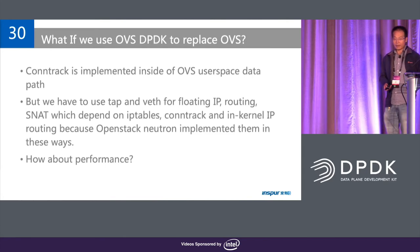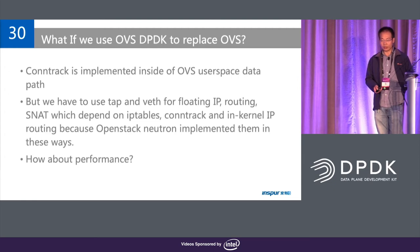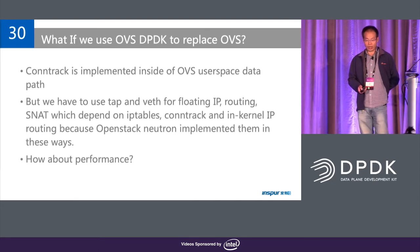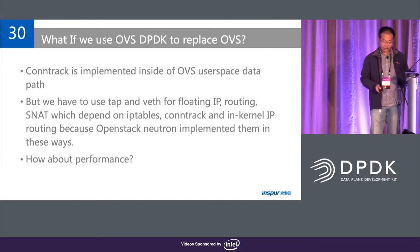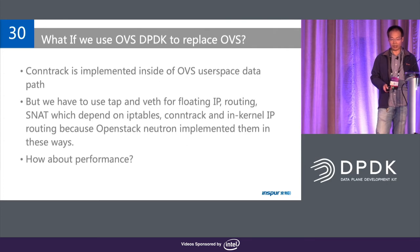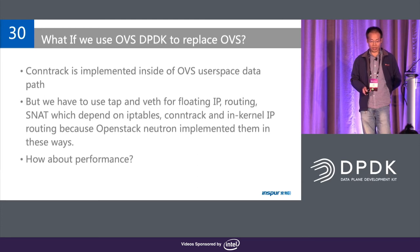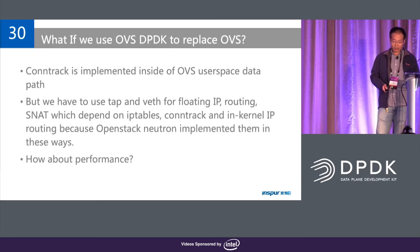So if we want to use OVS-DPDK to replace OVS in this deployment, what will happen? Actually we have a performance issue. OVS-DPDK implemented connection track in user space, but OpenStack Neutron doesn't use it. Actually OpenStack Neutron highly depends on kernel components such as floating IP, L3 routing, and SNAT. So we encounter a bigger performance issue.